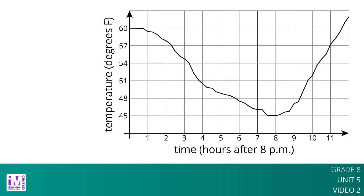Here is a graph showing the temperature in degrees Fahrenheit in a town as a function of time after 8 PM. The graph of a function tells us what is happening in the context the function represents. In this example, the temperature starts out at 60 degrees Fahrenheit at 8 PM.